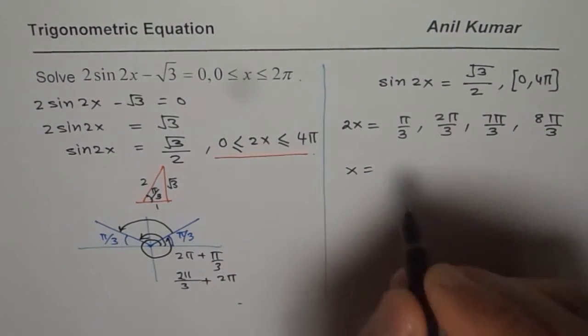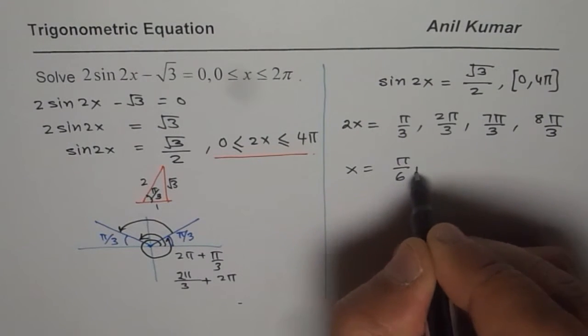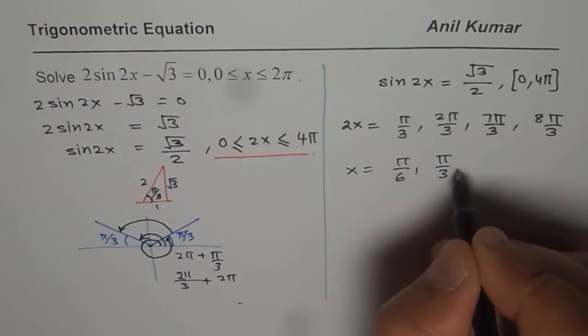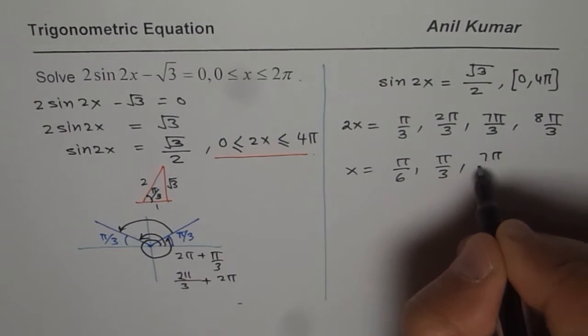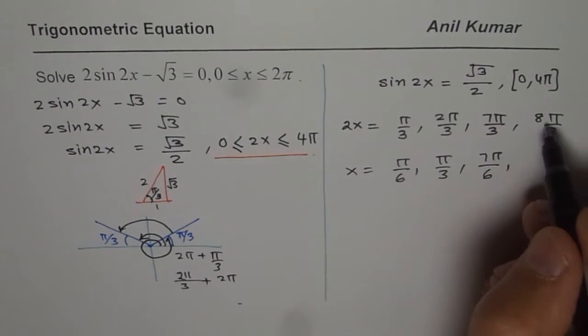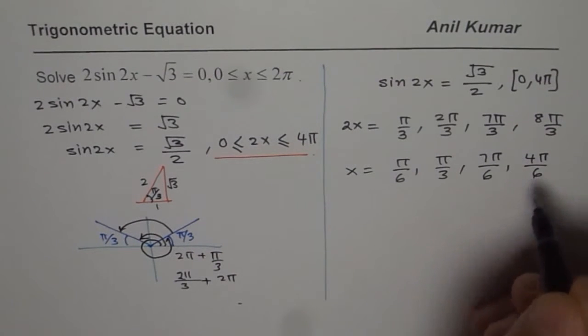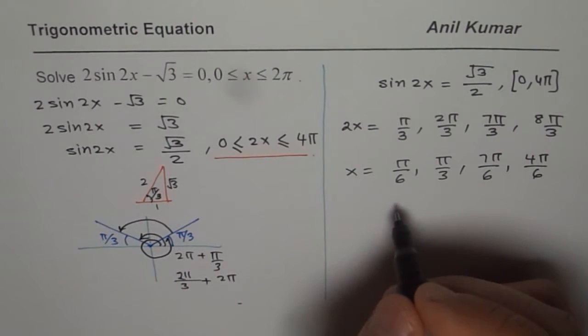What is x equals to? Divide each by 2: π by 6, 2π by 3 divided by 2 will be π by 3, 7π by 6, and 4π by 6. So these are the four solutions for us.